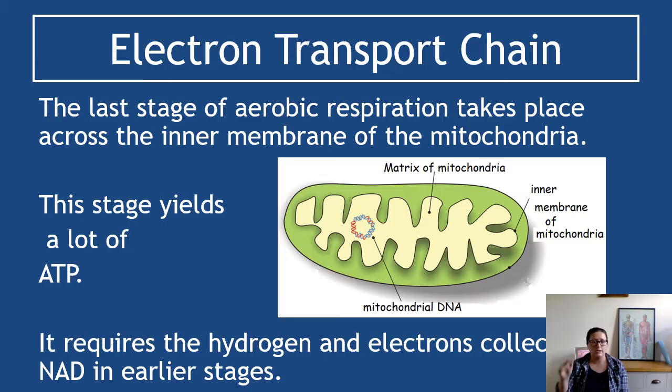Again in an exam question you wouldn't have to identify the location based on a picture, but you do have to be able to say this stage is the inner membrane of the mitochondria. This stage is the great one because it yields most of the ATP. So far from glycolysis we got two ATP, we get a tiny amount out of the citric acid cycle, so it's this last stage that's going to yield the most ATP for us and help keep our cells alive.